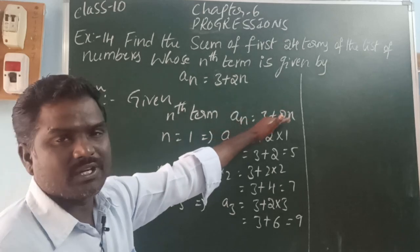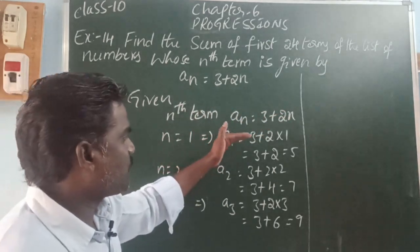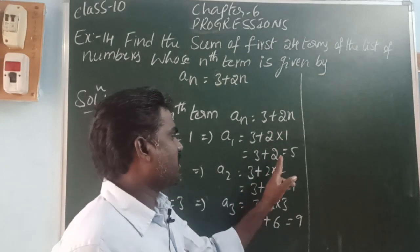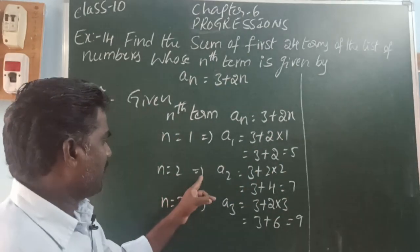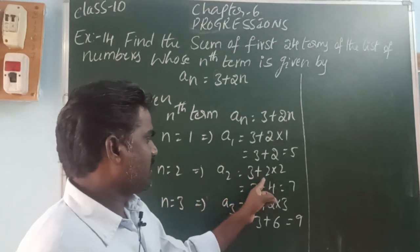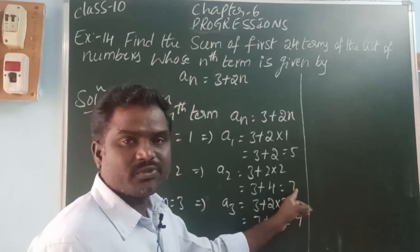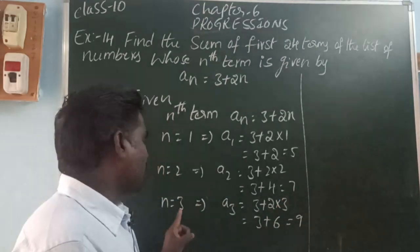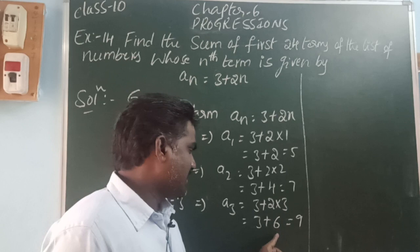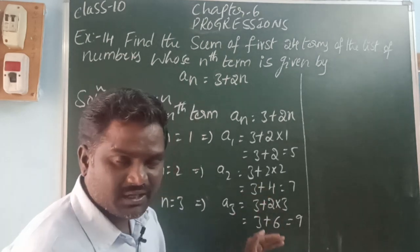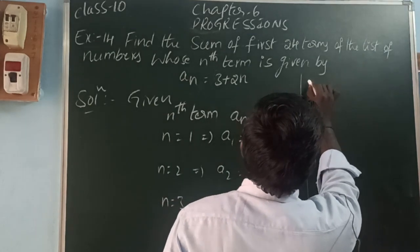Let n = 1, then a1 = 3 + 2(1) = 5. Let n = 2, then a2 = 3 + 2(2) = 7. Let n = 3, then a3 = 3 + 2(3) = 9. Like that we can get the terms.